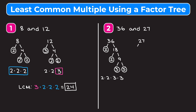Now let's do the same thing for 27. We break up 27 into 3 times 9. Three is prime so we circle it; 9 is not, so we continue to break it up: 9 is 3 times 3, and both 3s are prime so we circle them. So 27 can be written as 3 × 3 × 3.